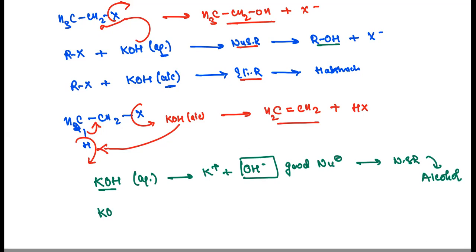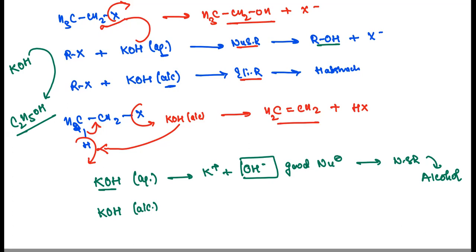On the other side, if we talk about potassium hydroxide when the alcoholic medium is present — let's say we take ethanol, C2H5OH — ethanol is an alcohol. So when potassium hydroxide, which is a strong base, is in ethanol, it tends to extract the hydrogen. This means that potassium hydroxide remains and also C2H5O minus is formed — this is the form that exists.